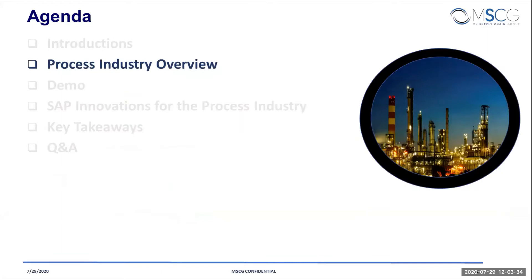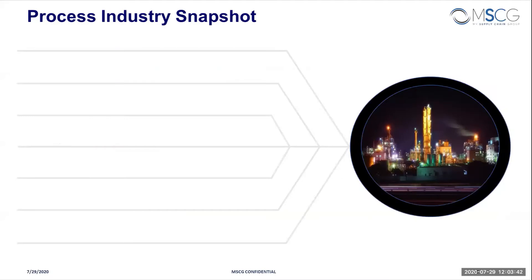I'm Suraj Matre and today I will be walking you through the process industry overview. When we say process industry, it comprises different industries such as chemicals, pharma, paint and coatings, beverage, etc. But today for demo purposes I'm going to focus on the chemical industry. So what are the key characteristics of this industry?